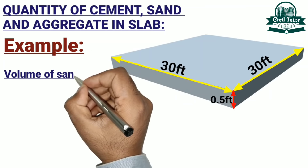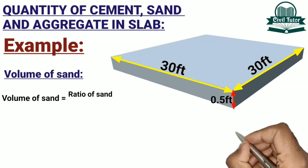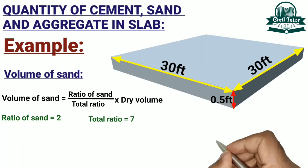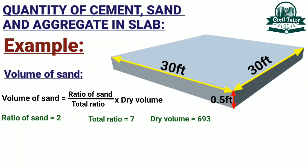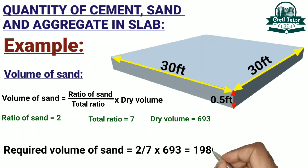The volume of sand is calculated using the formula: ratio of sand divided by total ratio, multiplied by dry volume of slab. The ratio of sand is 2, the total ratio is 7, and the dry volume is 693 cubic feet. Substituting these values, the required volume of sand is 198 cubic feet.